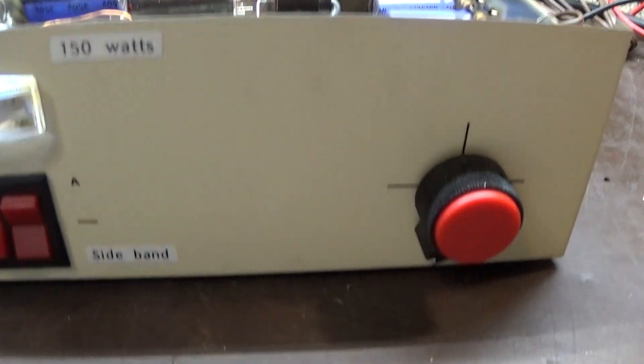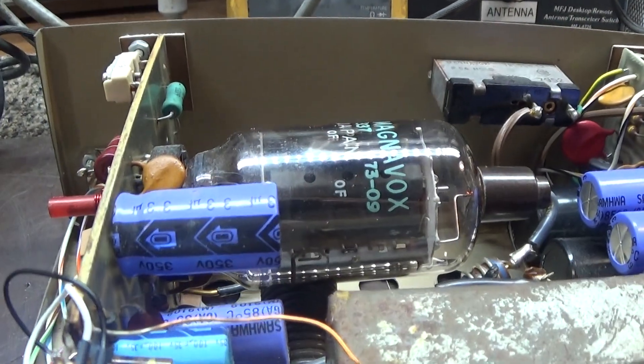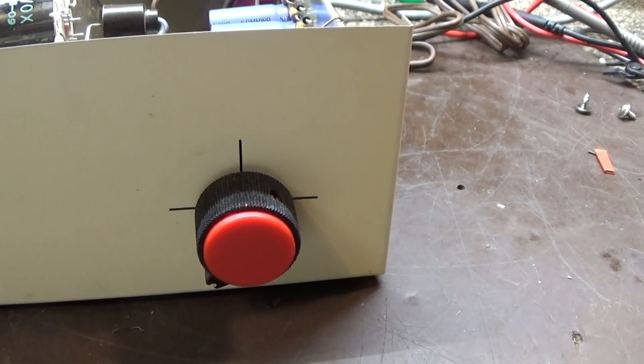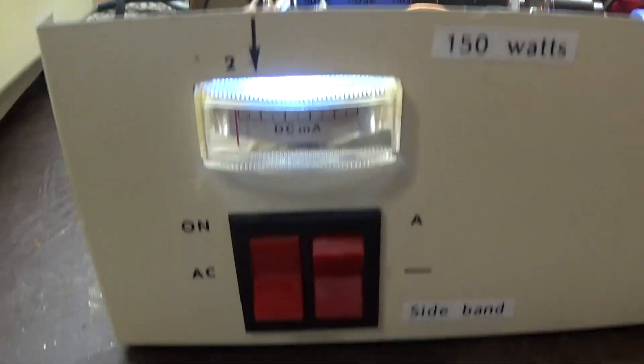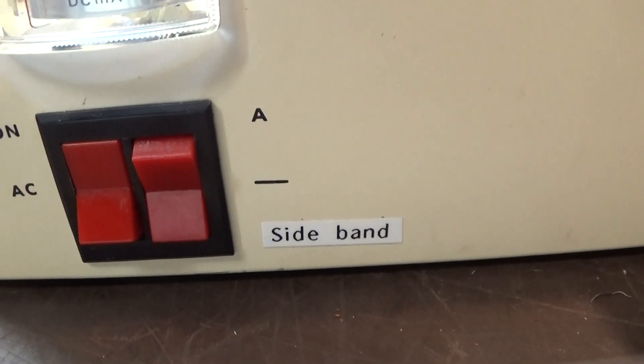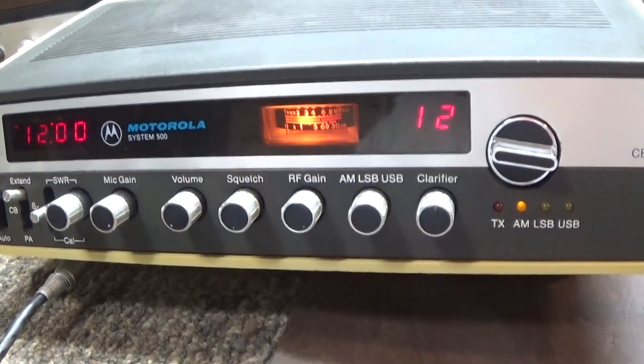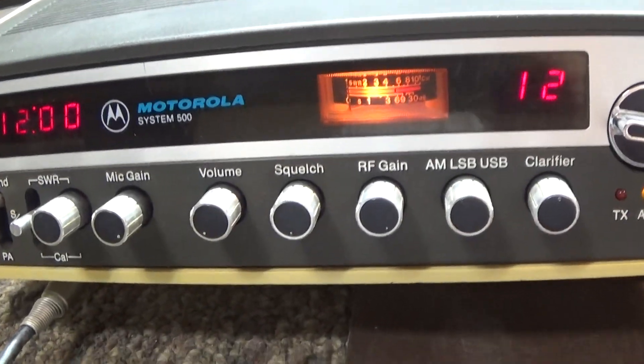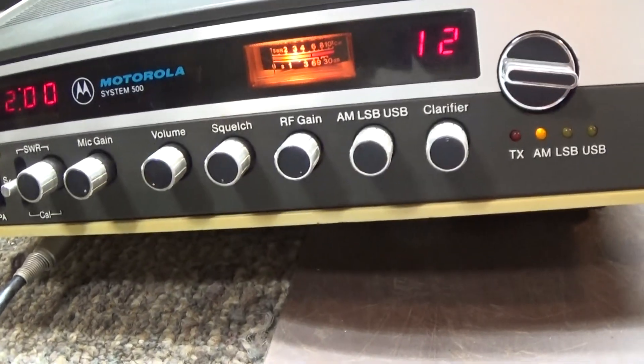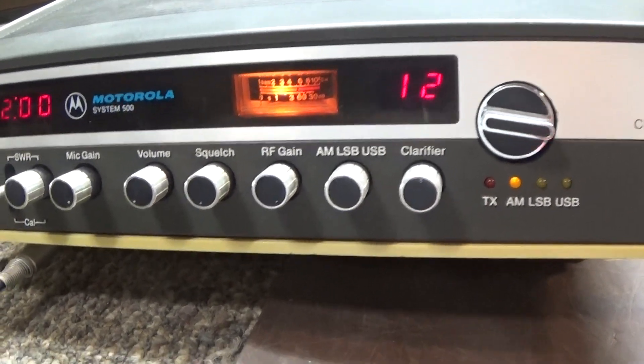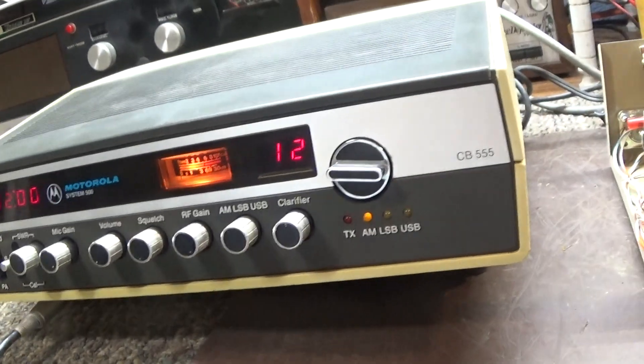There's no tuning on this thing, similar to some Black Cats. This dial here is just a power dial. Got a meter and a lighted meter, on-off AM standby and sideband switch on the right there. I'm driving it with my little trusty Motorola CB555 with the System 500, one of my favorite AM radios ever made. These things are great to receive, and this one's right.